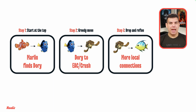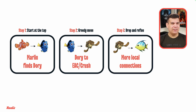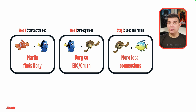The idea is: at each layer, move toward the target until you can't get any closer, then drop down. It's like taking highways as far as possible, then switching to local roads. When Marlin finally reaches Sydney Harbor, he only checks a few fish instead of millions. The hierarchical structure guided him to precisely the right neighborhood. This is O(log N) in action.